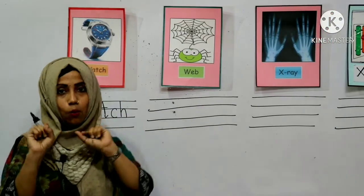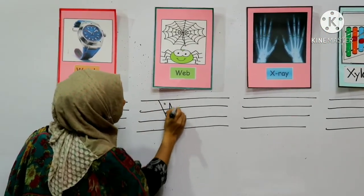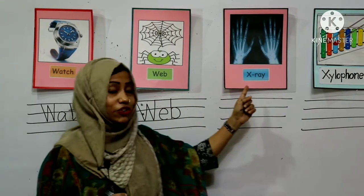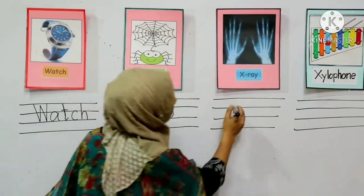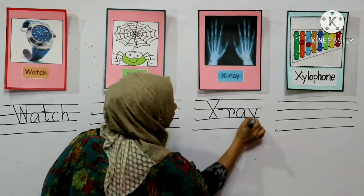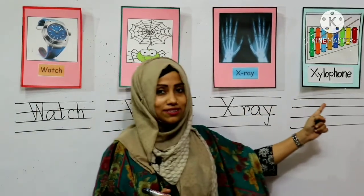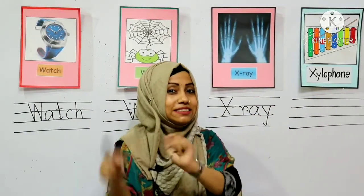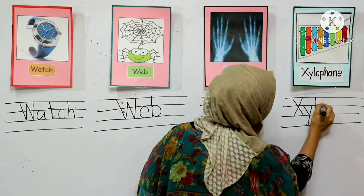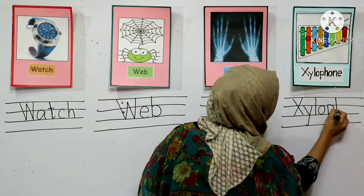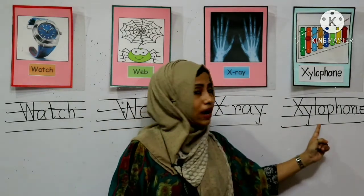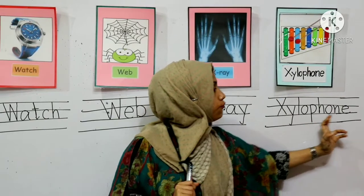Now what is this? Web. W-E-B. Web. What picture is this? X-ray. X — you have to make a line like this — X-ray. Now xylophone: X-Y-L-O-P-H-O-N-E. XY makes the xy sound. Xy-lo-phone. Xylophone.